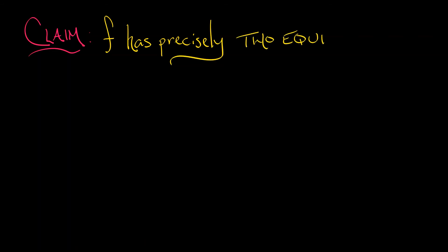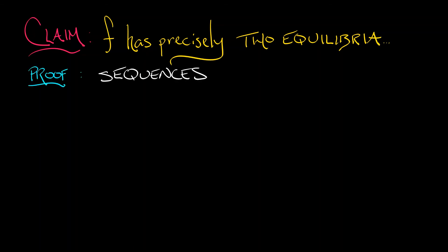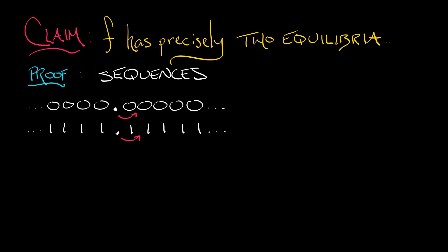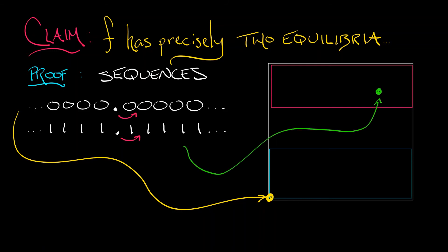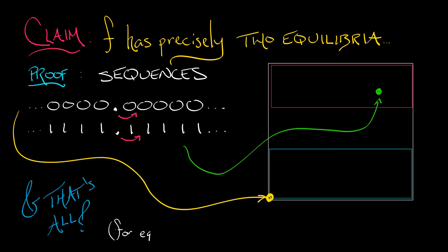Let's start off with something easy: the claim that the horseshoe map has exactly two equilibria. How do you prove that? How many ways are there to write down a bi-infinite symbol sequence in two digits that is invariant under the shift map? I can have a string that is all zeros, or I can have a string that is all ones, and that's it. The string of all zeros corresponds to the equilibrium in the lower left-hand corner — it starts in strip H0 and remains in H0 for all time, future and past. Likewise, the equilibrium corresponding to one repeated bi-infinitely starts and remains in the upper strip H1. And that's it as far as equilibria go.